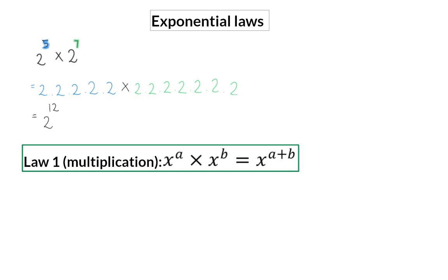And now we can form law 1. Instead of writing out all the base numbers as we did in our example, you can simply remember that when you are multiplying with the same base numbers, you can simply keep that base the same and focus on the exponents, and when you add them, you will get the total number of these base values that are being multiplied.